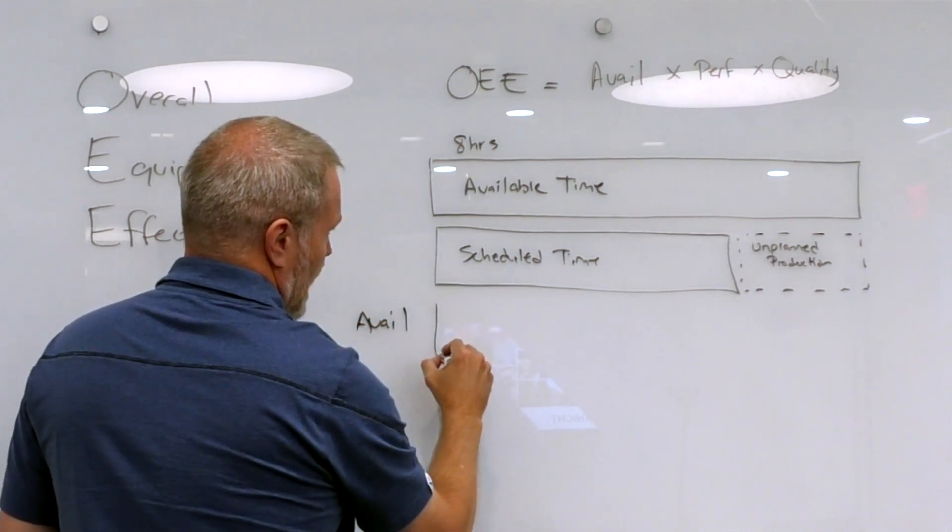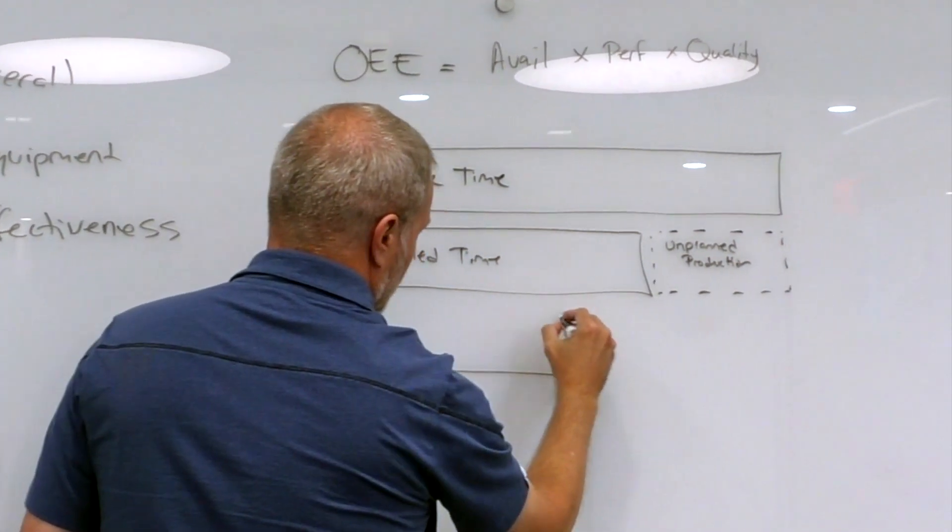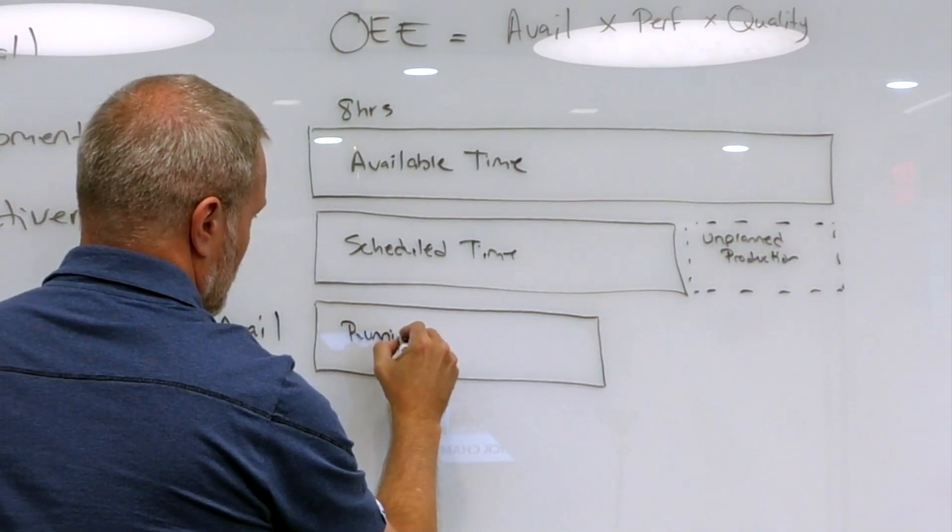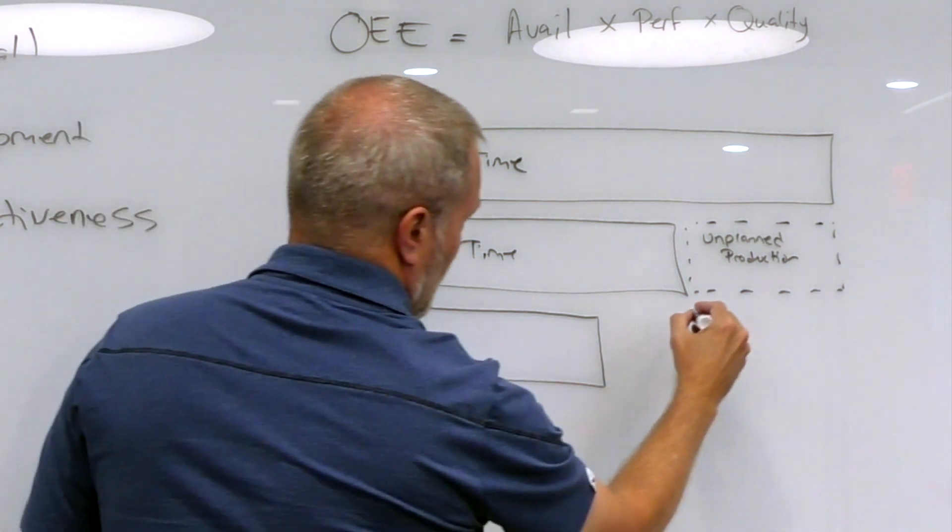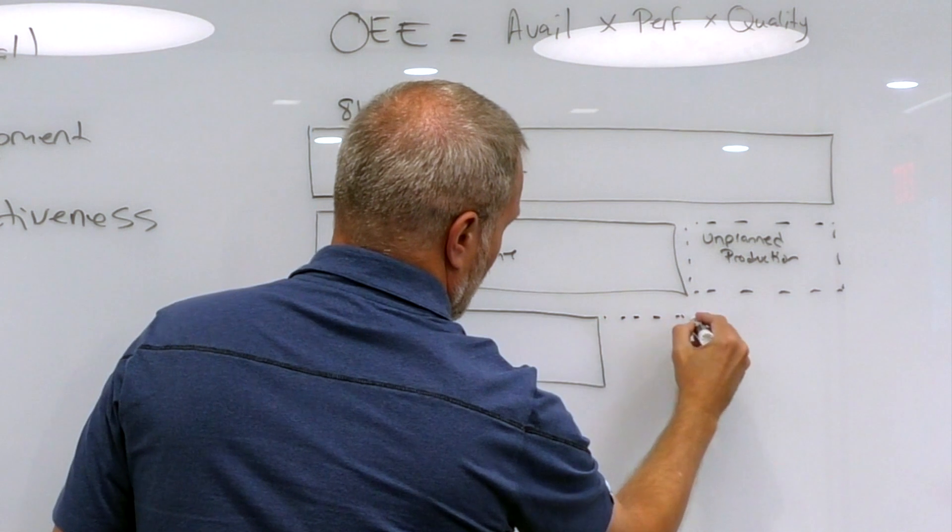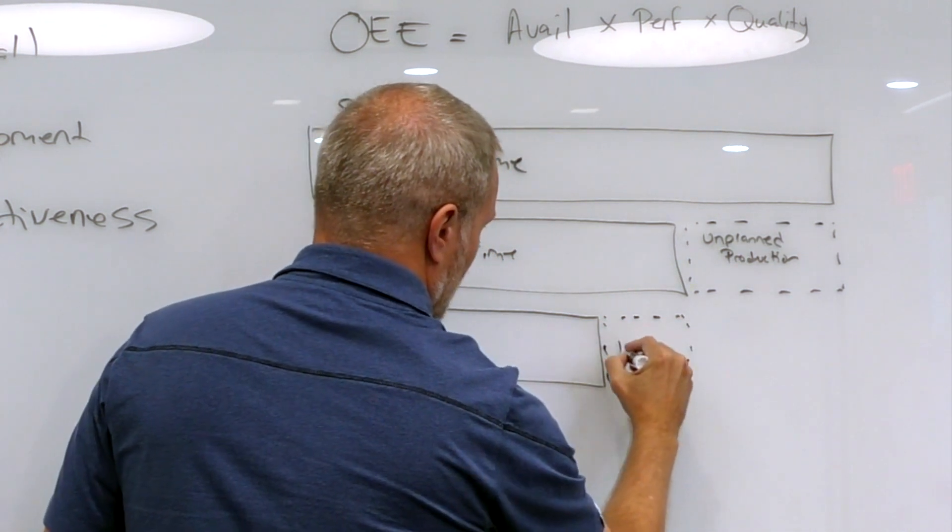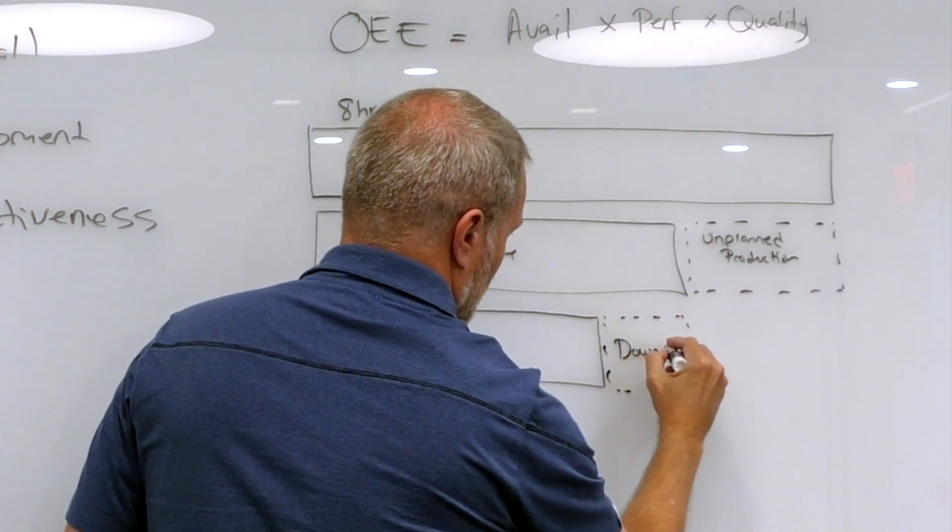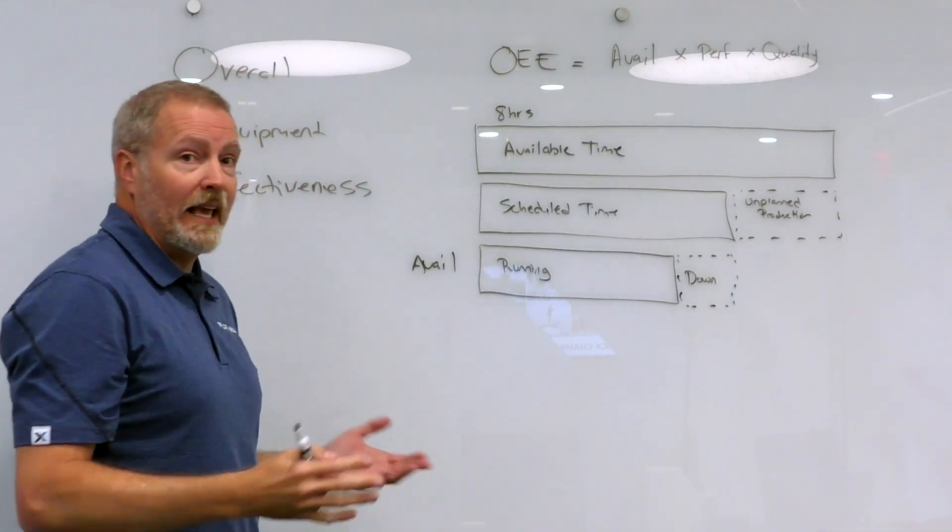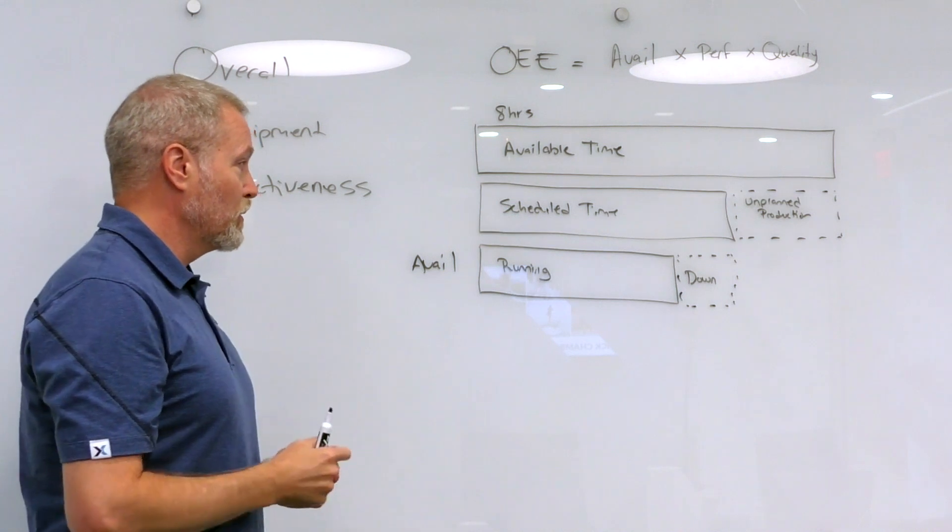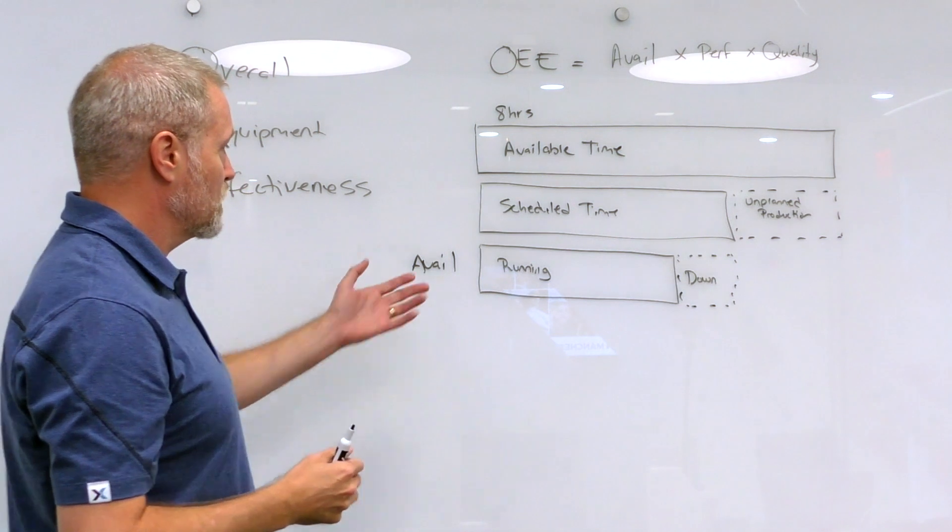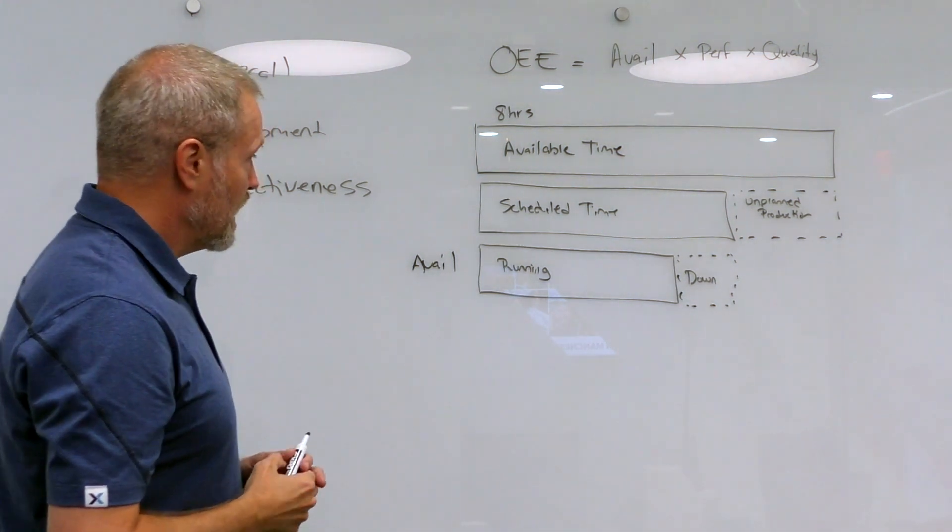That bar is made up of this is the time I'm actually running, and of our plan time, this piece represents some downtime. I was planning to run the machine or the line, but I can't because of a maintenance issue or an operator wasn't available to operate the machine, whatever those reasons are, that machine was not available to be run at that time.